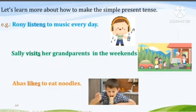Third: Ahas likes to eat noodles. Here the noun is singular — Ahas is a boy — so we add S with the verb to get 'likes.' Ahas likes to eat noodles.